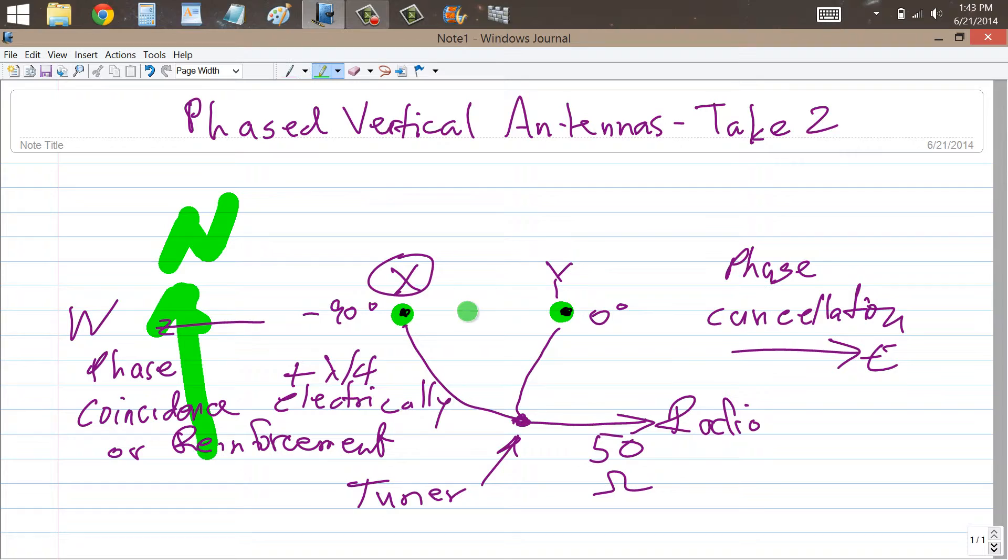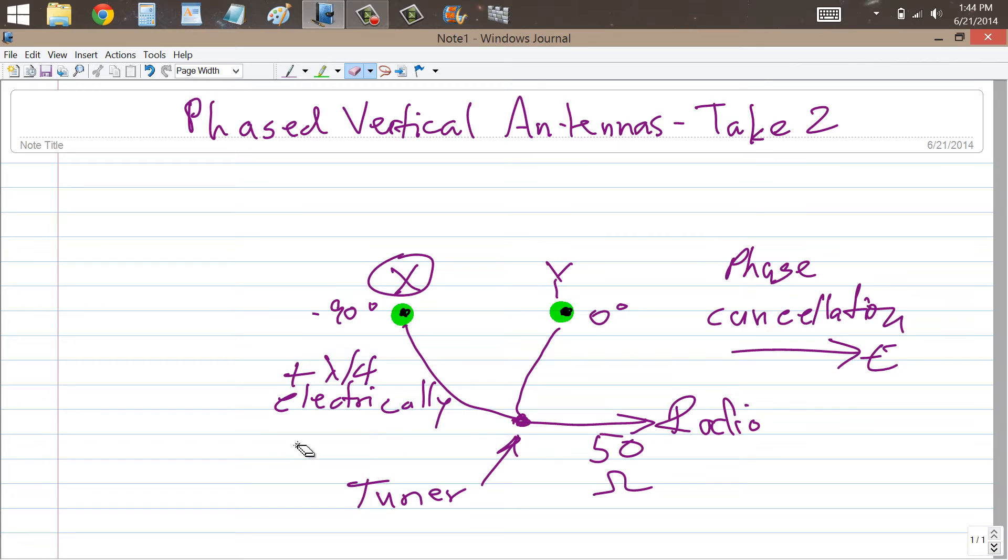At intermediate directions, say off in the north, the south, the northwest, the northeast, these intermediate directions, we're going to see intermediate phases. But we're going to end up with a unidirectional radiation pattern that favors the west. So it's the westerly direction that's going to see the best results.